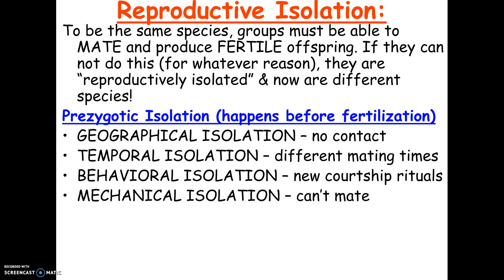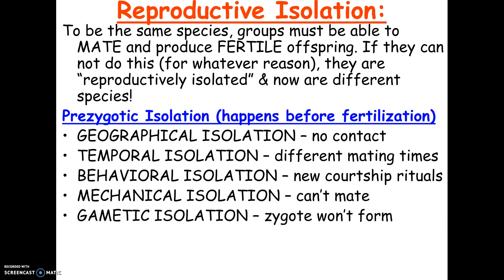Mechanical isolation is where organisms become physically different such that their sex organs literally won't match up. And finally, gametic isolation — they might try to mate, but sperm and egg can't fuse together and you can't get a fertilized egg because they're just not compatible.